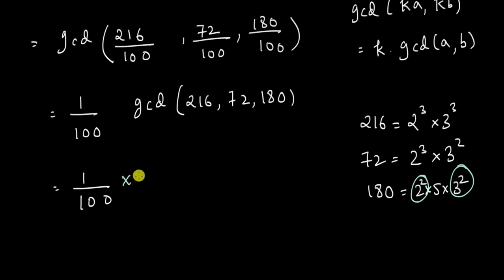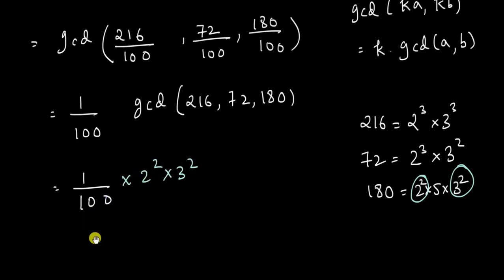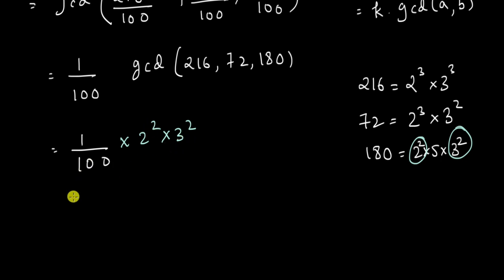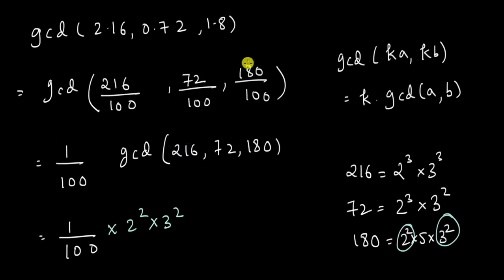So this will be 2² × 3². And we are done. So this is 4 × 9, 36. 36/100 and the answer is 0.36. And just like that we have found the GCD of these decimal numbers. So whenever we are finding GCD, just get these decimals to have a common denominator and get that common denominator out and you can find the GCD.